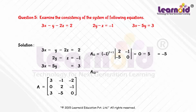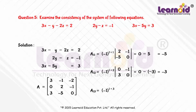A12 is equal to (-1)^(1+2) into determinant [0, -1; 3, 0], which is equal to minus 3. A13 is equal to (-1)^(1+3) into determinant [0, 2; 3, -5], which is equal to minus 6.